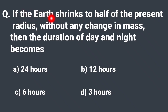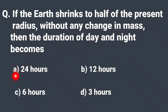If the Earth shrinks to half of the present radius without any change in mass, then the duration of day and night becomes: (a) 24 hours, (b) 12 hours, (c) 6 hours, (d) 3 hours.